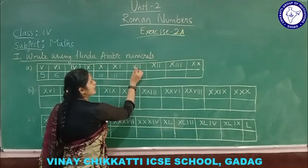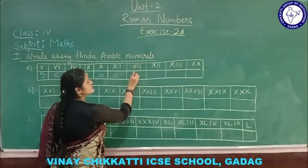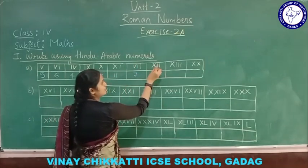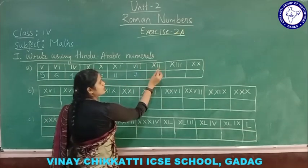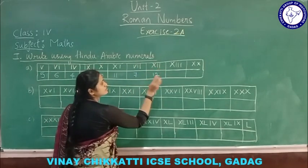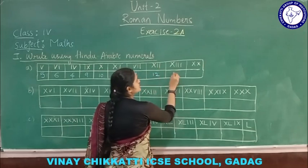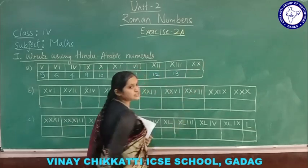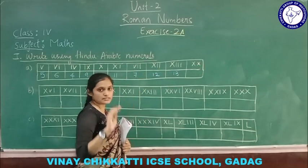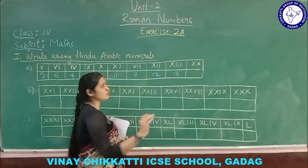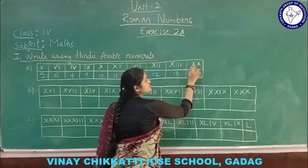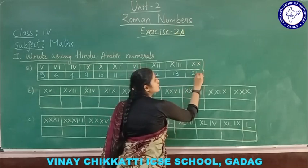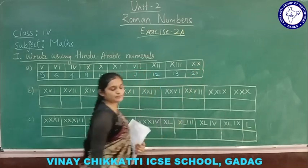V I I is 5 plus 1 plus 1 equals 7. X I I means 10 plus 1 plus 1 equals 12. X I I I is 13. X X means the same number gets repeated in a single row and gets added: 10 plus 10 equals 20.